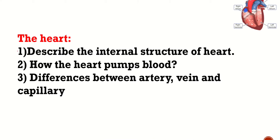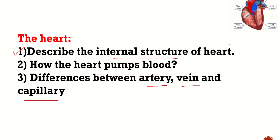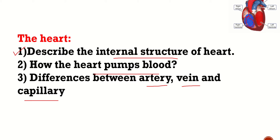So here's a question and answer. We'll try to write: describe the internal structure of the heart, how the heart pumps blood, and the difference between artery, vein and capillary. Here you can see this is the aorta, right atrium, right ventricle, left atrium, left ventricle, and this is the pulmonary artery.